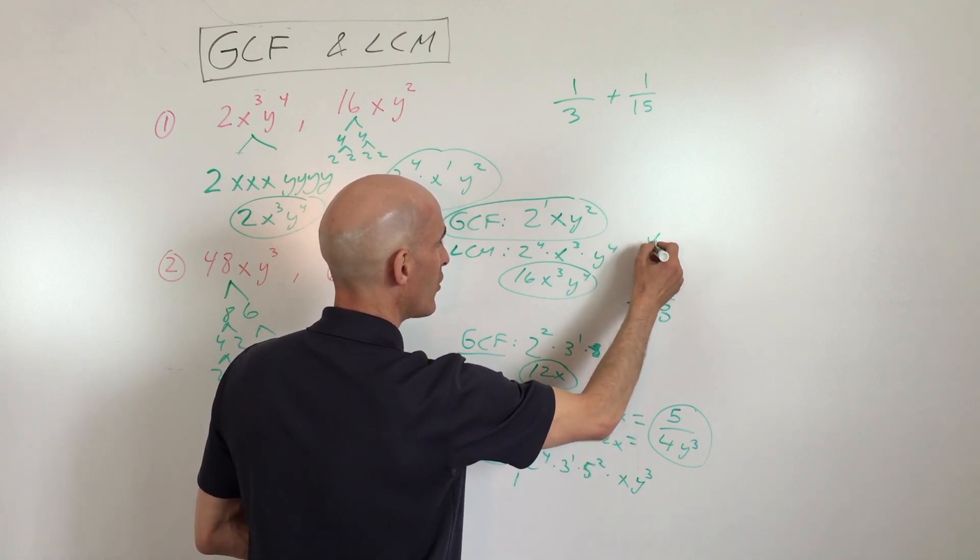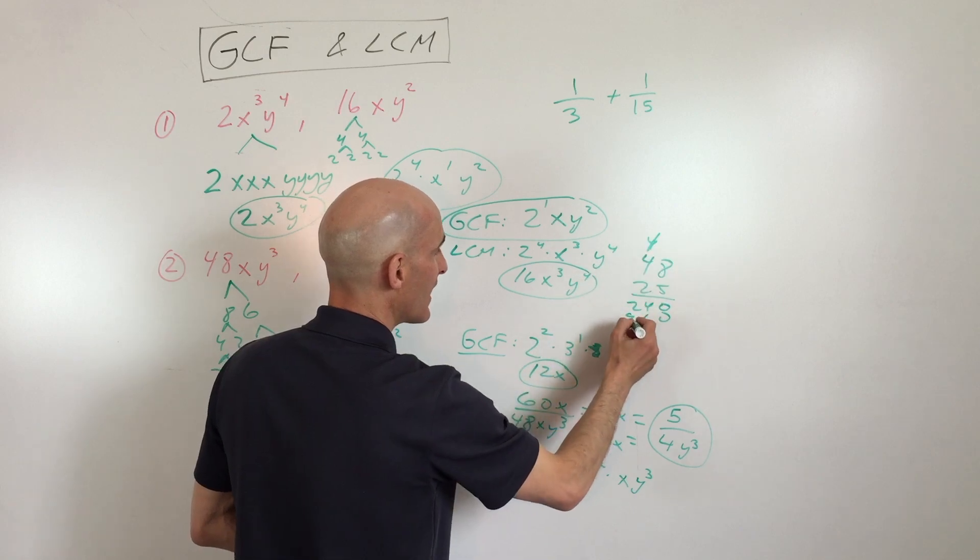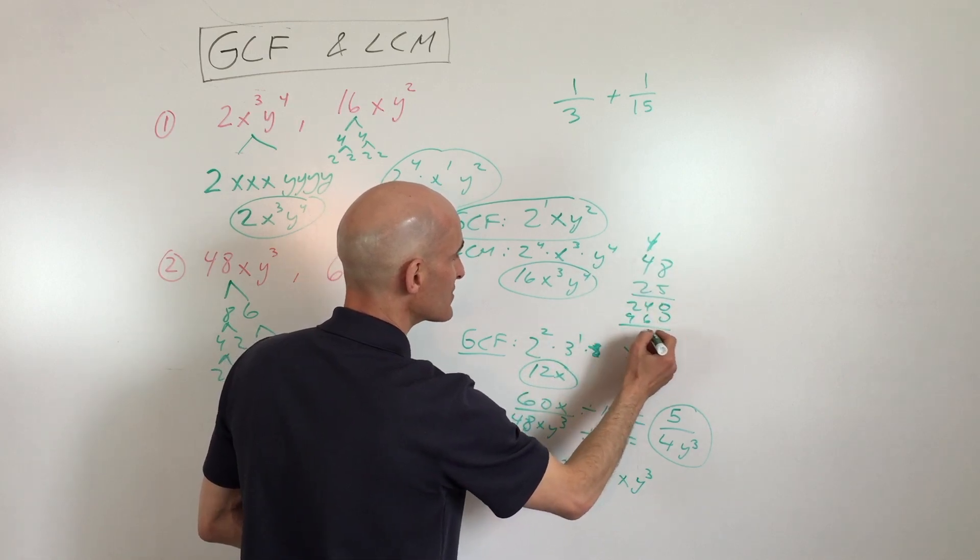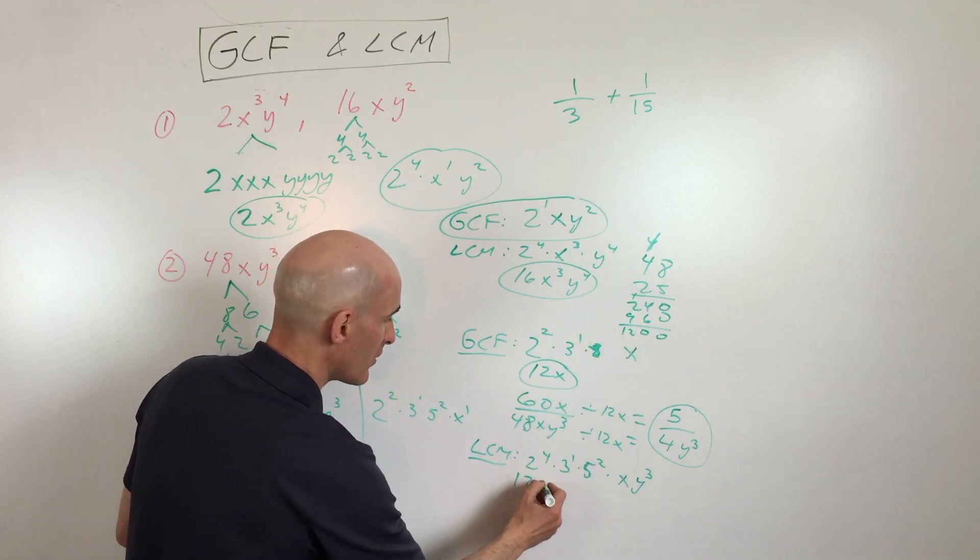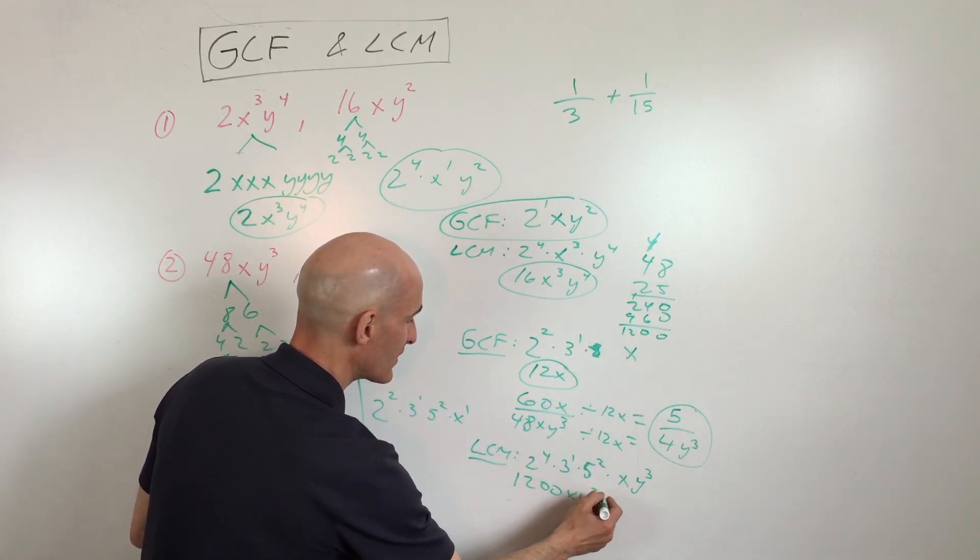That's 8, 9. So we're getting, let's see, what is this? 0, 0, 1,200. So we're basically getting 1,200xy³.